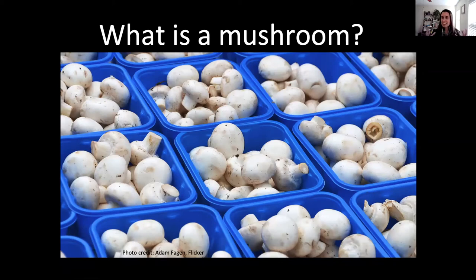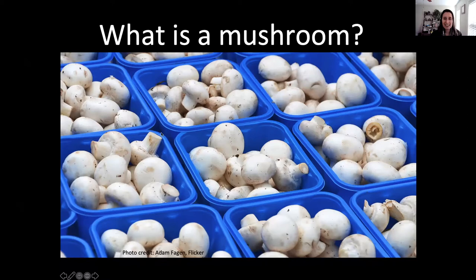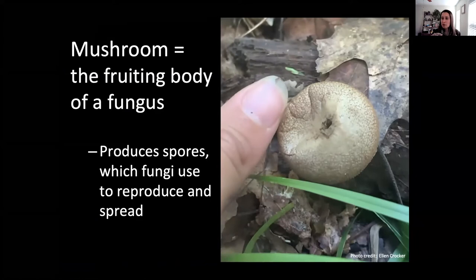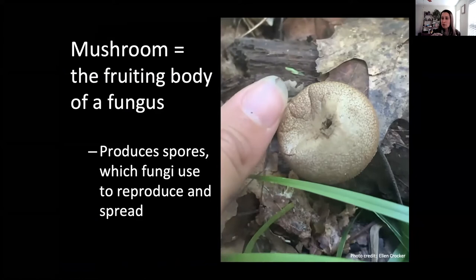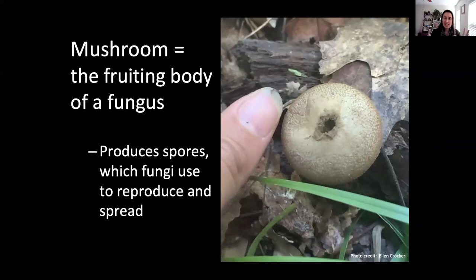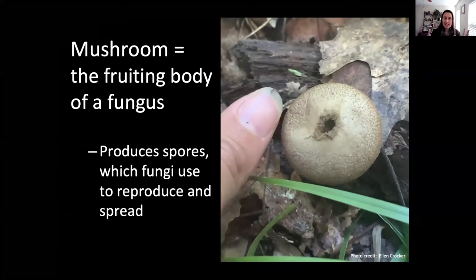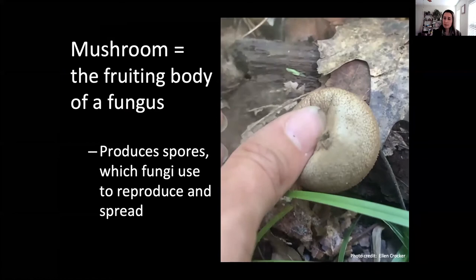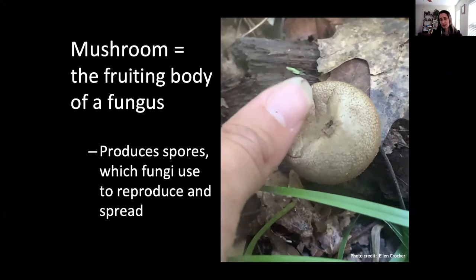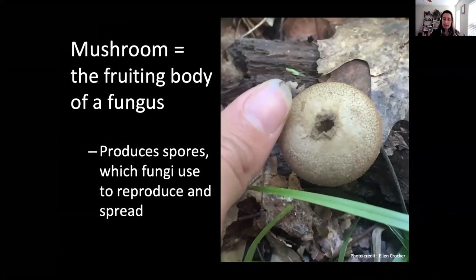Most folks are familiar with the mushrooms that grow like those at the grocery store — that might be what most people think of as mushrooms. But mushrooms in general are the fruiting bodies of a fungus. Their whole goal is to make spores. In this video you can see me poking a puffball and it produces spores — that's the whole reason mushrooms exist. Fungi produce spores, those spores get around, and that's how they reproduce and spread.